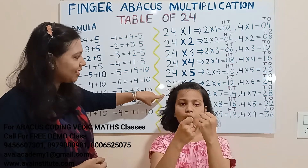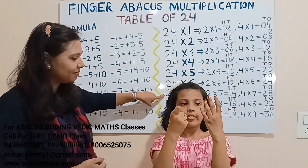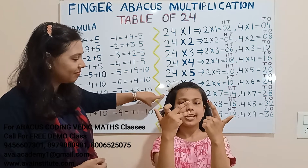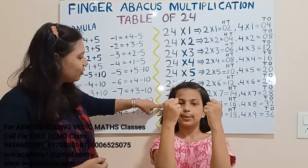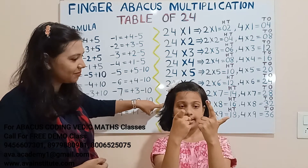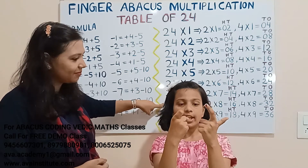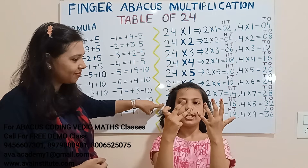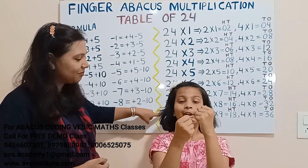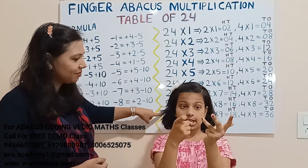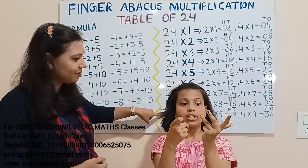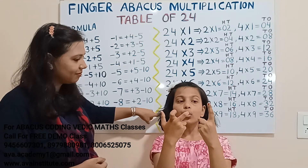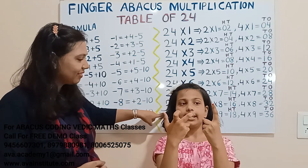24 sevens are: 2 sevens are 14, 4 sevens are 28 — answer is 168. 24 eights are: 2 eights are 16, 4 eights are 32 — answer is 192. 24 nines are: 2 nines are 18, 4 nines are 36 — answer is 216.